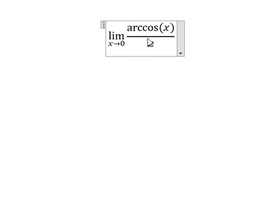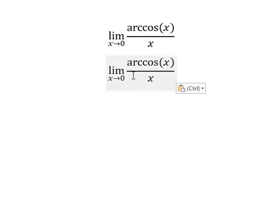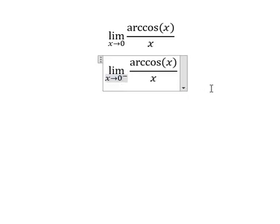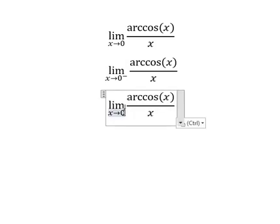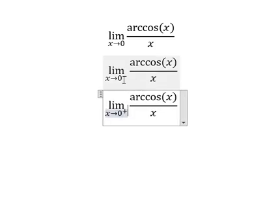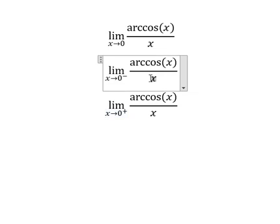So in this situation we just consider the limit on the left and the limit on the right. On the left we can see that this one you got negative, but this one we still have π over 2.